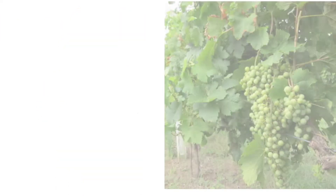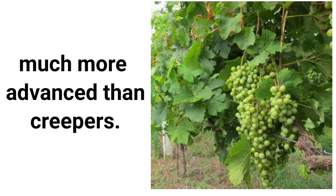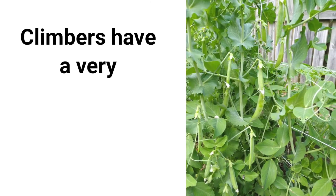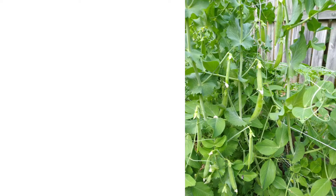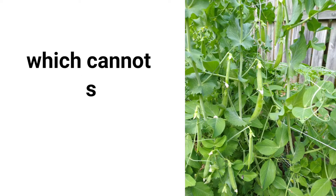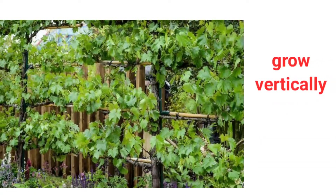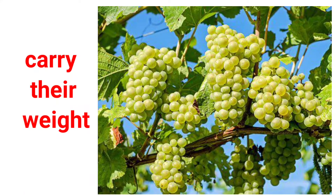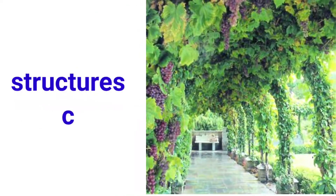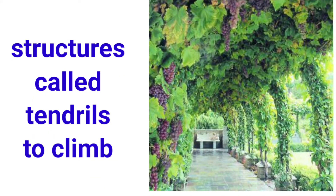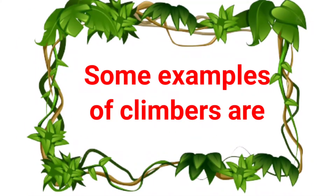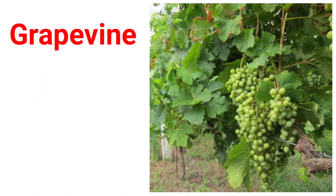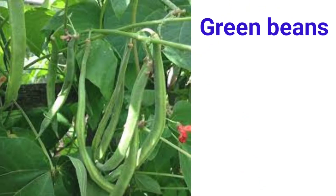Climbers are much more advanced than creepers. Climbers have a very thin, long and weak stem which cannot stand upright, but they can use external support to grow vertically and carry their weight. These types of plants use special structures called tendrils to climb. Some examples of climbers are grapevine, green peas, cucumber, money plant, green beans, etc.